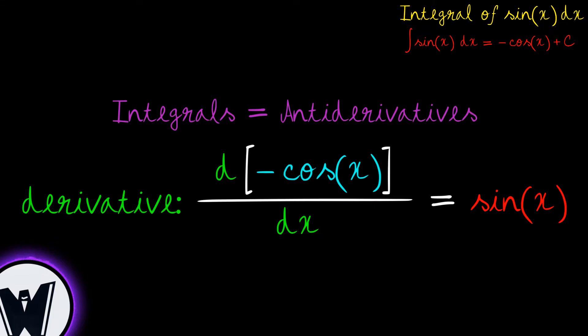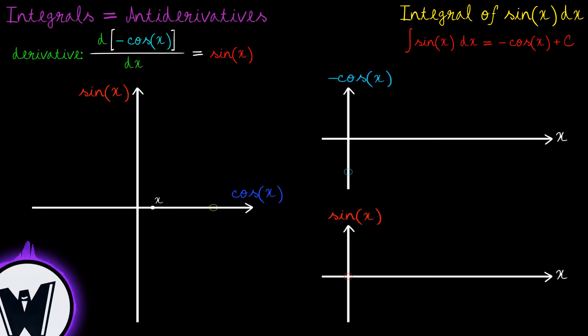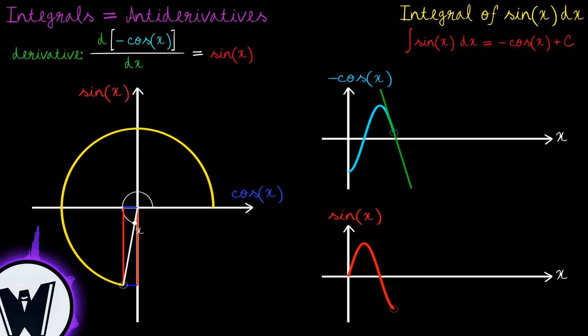This can be explained by using our own trigonometric circle or unit circle along with the graphs of negative cosine of x in cyan color and sine of x in red color.